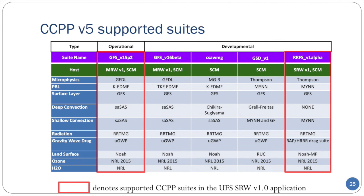The operational GFS suite, known as GFS V15P2, is the first supported suite, using GFDL microphysics, the K-Eddy Diffusivity Mass Flux PBL scheme, GFS surface layer, scale-aware simplified Arakawa-Schubert deep and shallow convection, RRTMG radiation, the unified gravity-wave physics scheme, the NOAA land surface model, and ozone and stratospheric water vapor schemes from NRL. The other supported suite, which is developmental, is known as RRFS V1-alpha and substitutes the MYNN scheme for the PBL and shallow convection, Thompson for the microphysics, and the NOAA MP scheme for the LSM. Note that there is no deep convection scheme in this suite, since it is targeted for use at horizontal resolutions where deep convection is primarily not subgrid scale. Other suites in this table include many CCPP-compliant schemes available for research and developmental purposes.